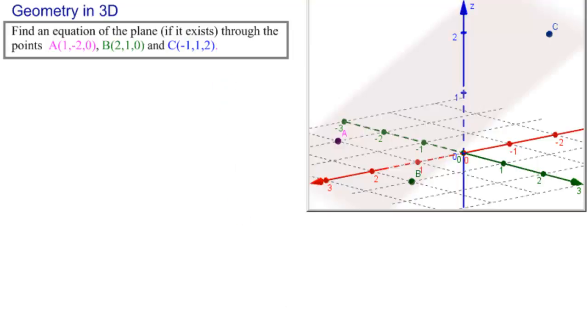Well, three points determine a plane if they're not in the same line, if they're not collinear. So let's look at these three points. Here we have the three points A, B, and C, and they're not collinear. Here's the plane, and we want to find the equation of this plane.